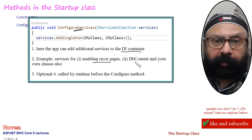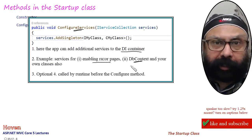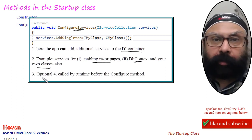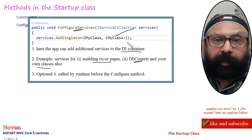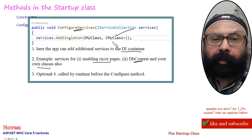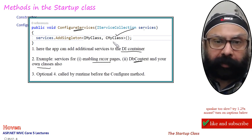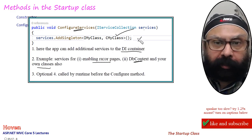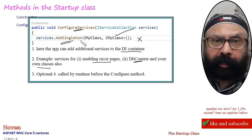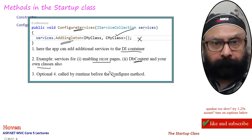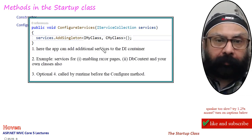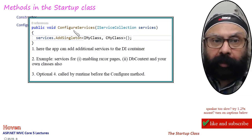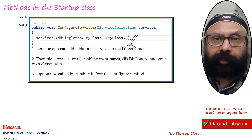You can even add your own classes. For example, we are adding a custom class called CbyClass. This class was explained in a previous lecture during logging. We will explain AddSingleton, AddTransient, etc. later on. In a nutshell, the ConfigureServices method allows you to add additional services to the container.